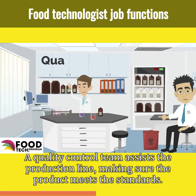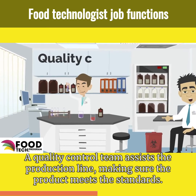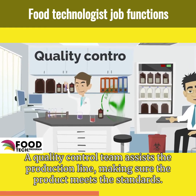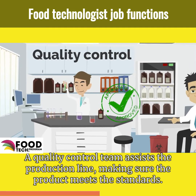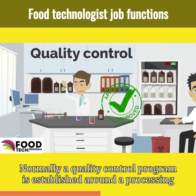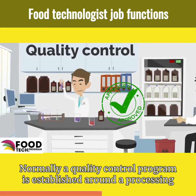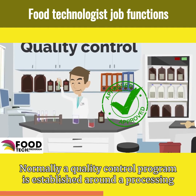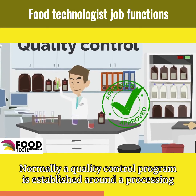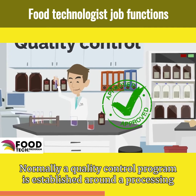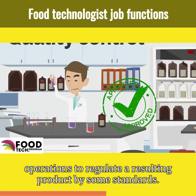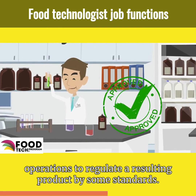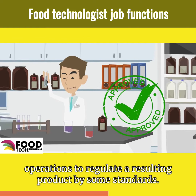They use the laws of science and engineering to produce, process, evaluate, package, and distribute foods. A quality control team assists the production line, making sure the products meet the standards. Normally, a quality control program is established around processing operations to regulate the resulting product by some standard.